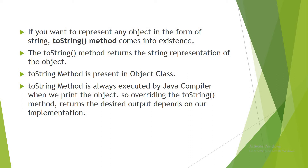The toString method is present in the Object class, which is the superclass of every class in Java. So any class can make use of the toString method. It is always executed by the Java compiler whenever we print the object — which means whenever we write System.out.println and pass some reference variable, by default the Java compiler will call the toString method.